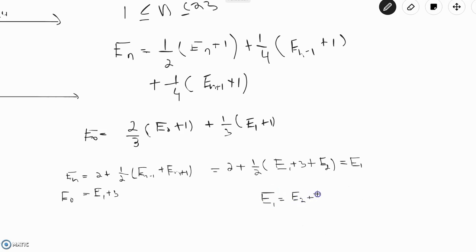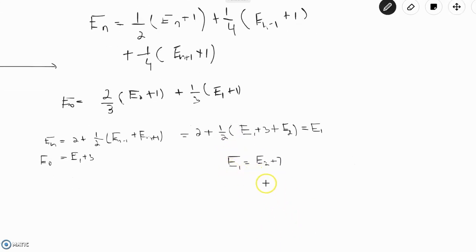Similarly, for E(2), if we plug in E(1) equals E(2) plus 7 for the expression for E(2). We have E(2) is equal to 2 plus one-half times E(1) plus E(3). But E(1) is equal to E(2) plus 7. So this is just E(2) plus 7 plus E(3). And simplifying both sides gives us that E(2) is equal to E(3) plus 11.